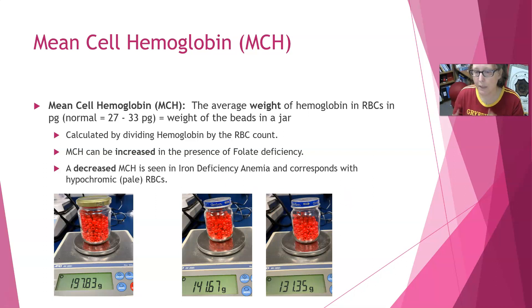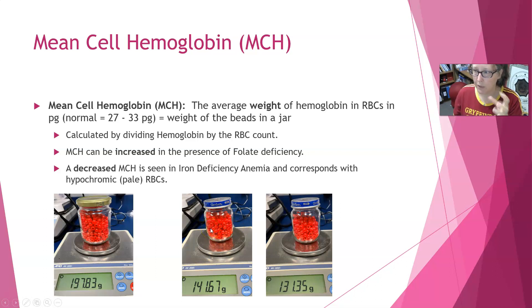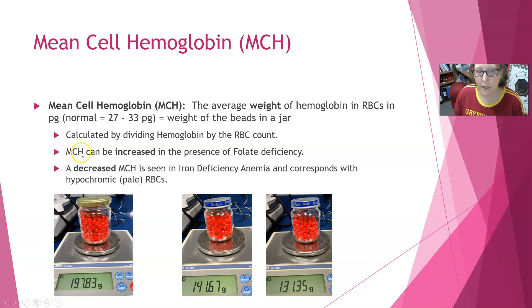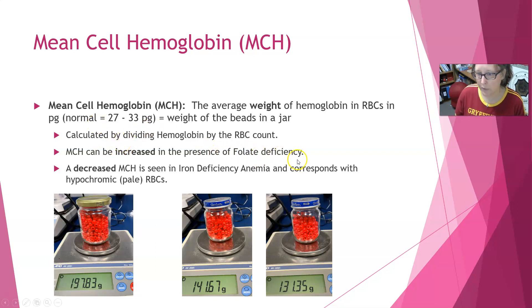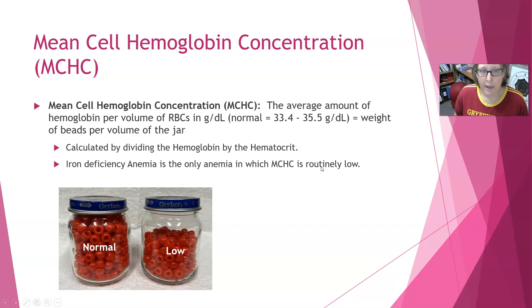In iron deficiency anemia you also have the smaller cells — the microcyte size — but cells can be smaller and still have a normal weight for their size. If they don't have as much hemoglobin in them, they'll look pale even if two cells are the same size. Increased MCH, meaning cells that are heavier with more hemoglobin, can be seen with folate deficiency.